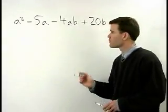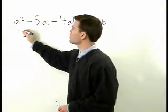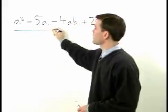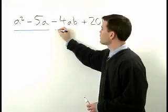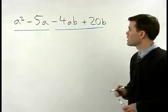In this problem, we're going to group the first two terms together, a squared minus 5a, and the last two terms together, negative 4ab plus 20b.